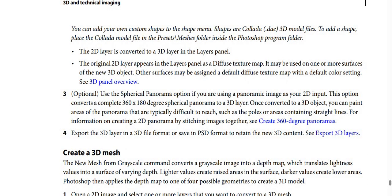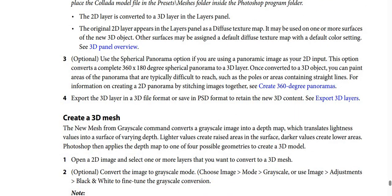The 2D layer is converted to a 3D layer in the Layers panel. The original 2D layer appears in the Layers panel as a diffuse texture map and may be used on one or more surfaces of the new 3D object. Other surfaces may be assigned a default diffuse texture map with a default color setting.